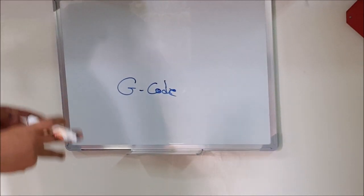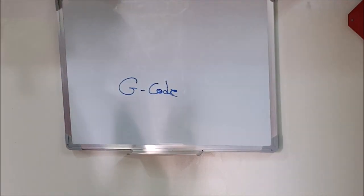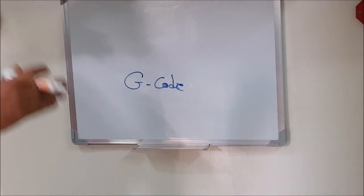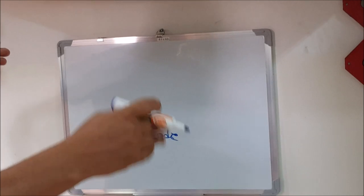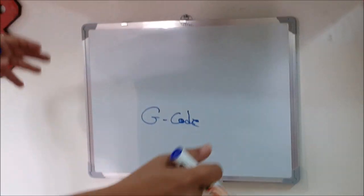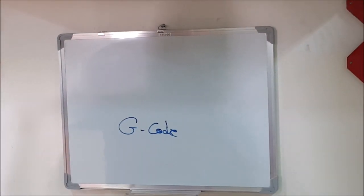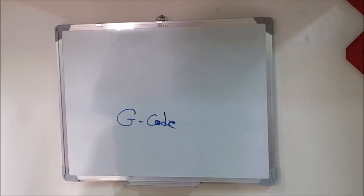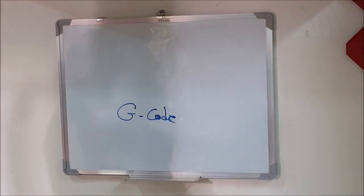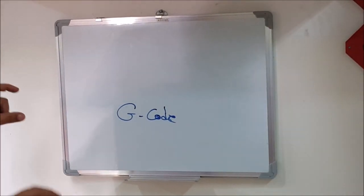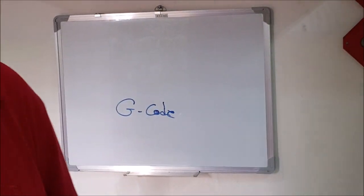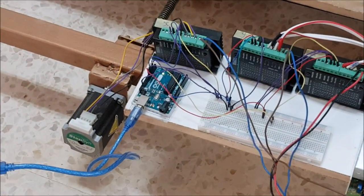The G-code needs an interpreter to translate it to the machine. For example, G-code says G1 X-something Y-something Z-something, then G2, etc. We can understand what this means, but the machine needs something to interpret this language. Therefore, the microcontroller — which is the Arduino — acts as the interpreter.